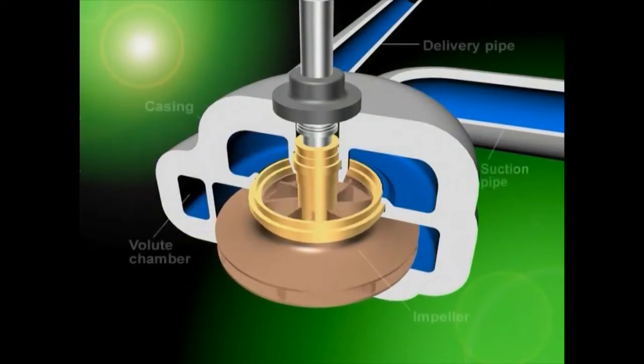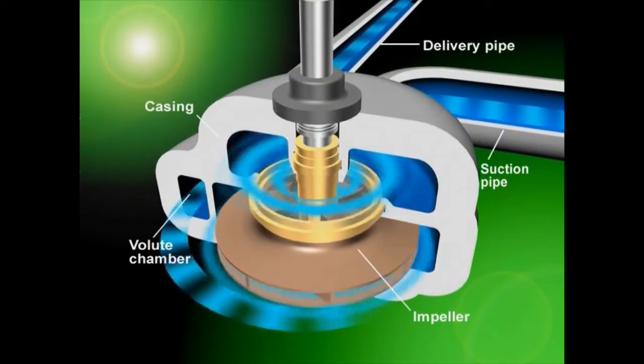With centrifugal pumps, a motor is used to rotate a vane wheel called an impeller. The centrifugal force thus generated is used to send water out. Let's have a look at this principle.